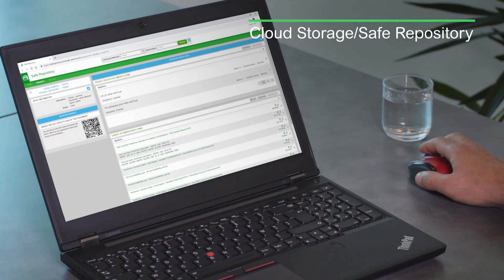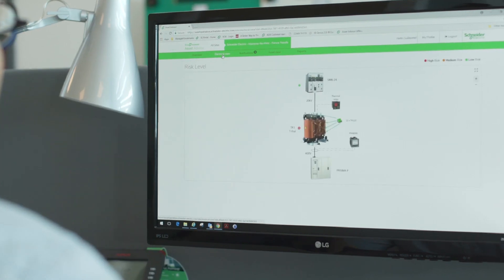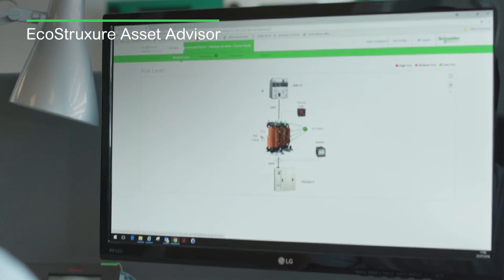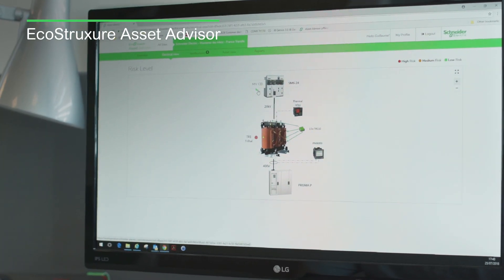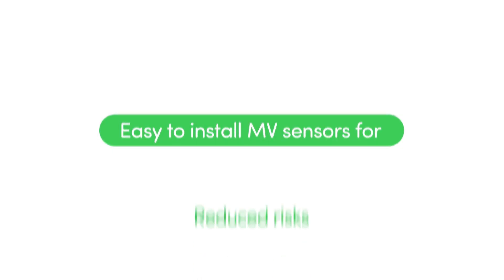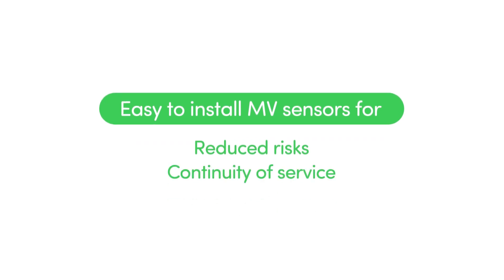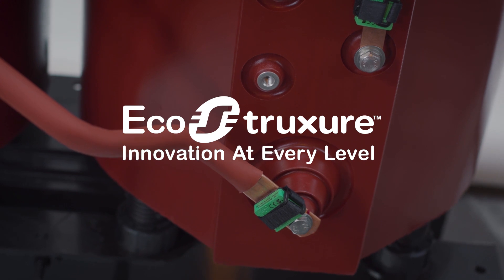Eco-structure ready connectivity also brings condition monitoring to your equipment, including Trihal transformers, allowing you to have better visibility of your equipment. This leads to enhanced safety, more efficiency, and a more reliable power network that saves you time and money.